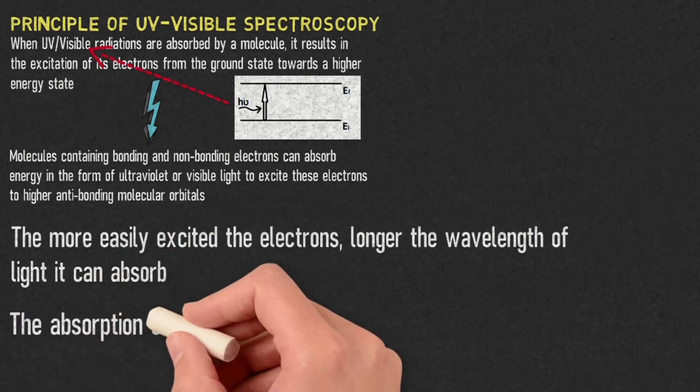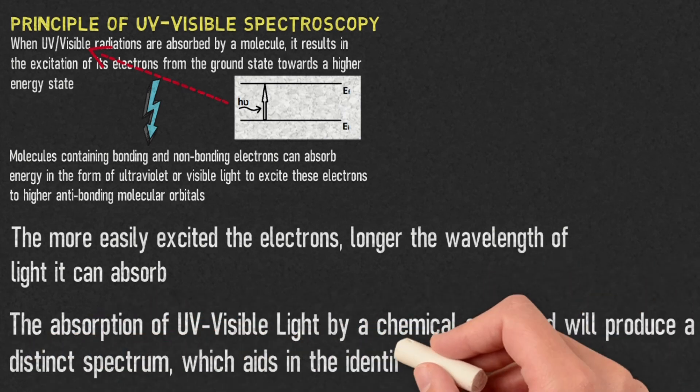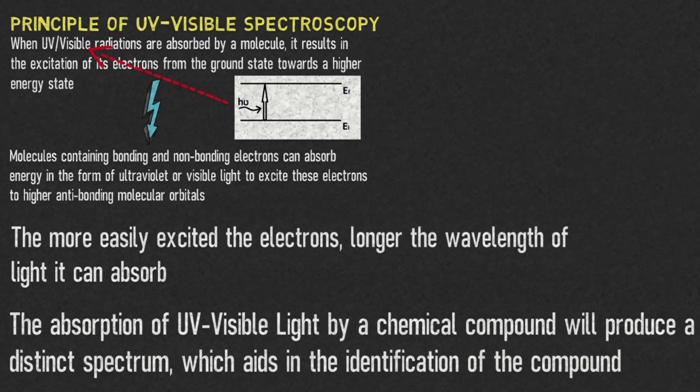The absorption of UV-visible light by a chemical compound will produce a distinct spectrum, which aids in the identification of the compound. This is one of the applications of UV-visible spectroscopy.